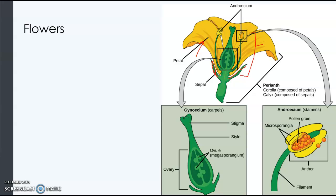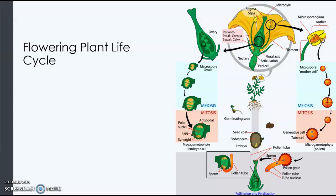Then you have the carpels, which are the female structures. They contain a stigma, a style, and then ovules within the ovary. The ovules are the eggs. Sometimes you see the male and the female structures within the same flower.